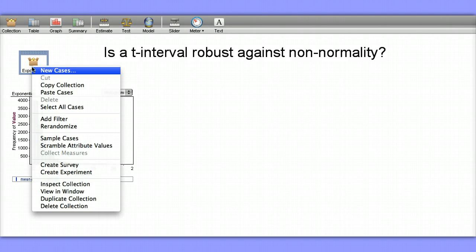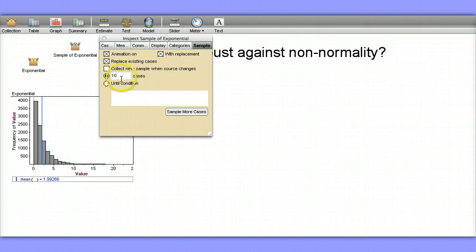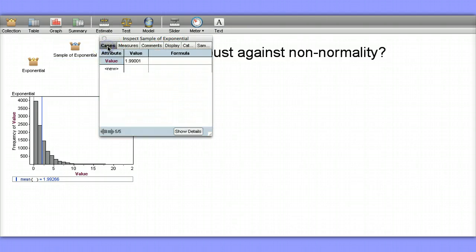Let's start by collecting a sample of values or a sample of cases from this distribution. I actually want to take a sample size of 5, so let's take care of that. We can see that we do have 5 cases here.